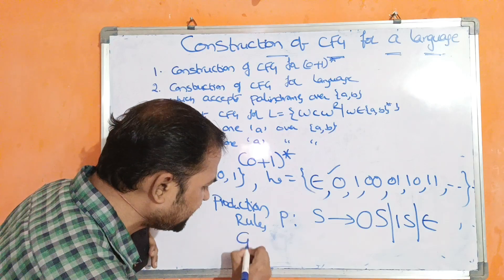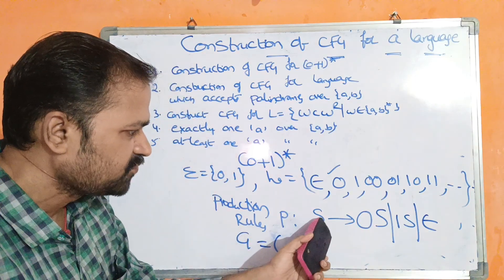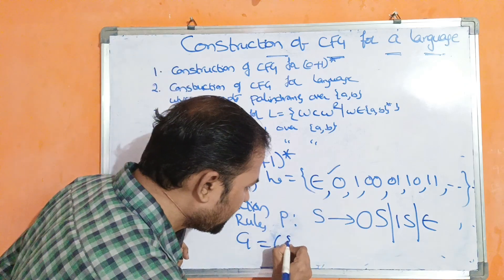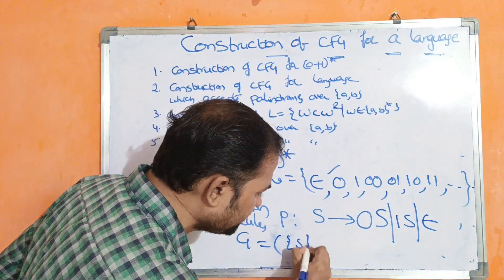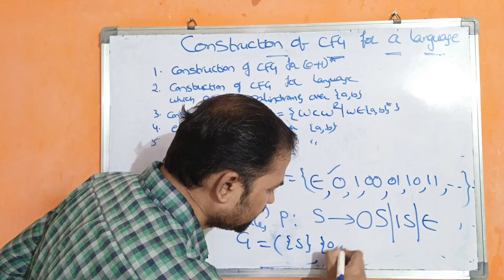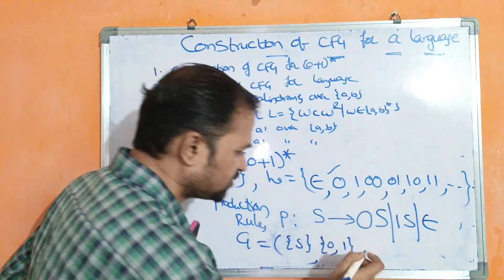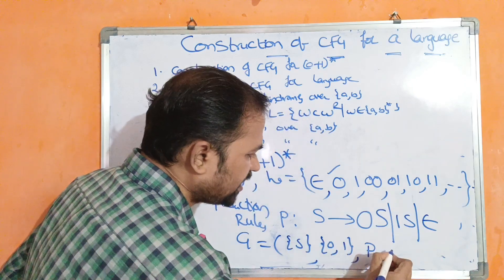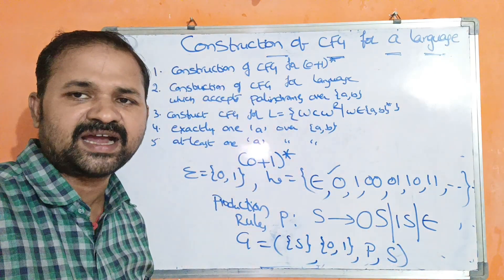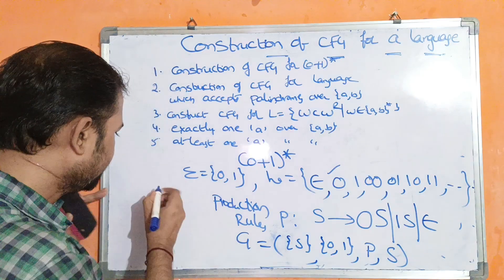So the context-free grammar is G = (V, T, P, S), where V contains only one non-terminal, terminals are 0 and 1, we have three productions, and the starting symbol is S. Now let us take a string and check whether it is derived or not. Let us take 1, 1, 0.